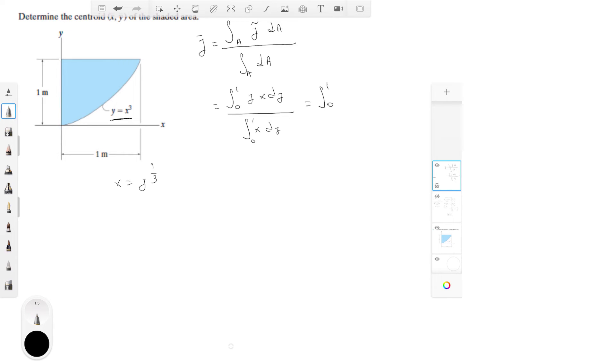Integral from 0 to 1 of y to the four thirds dy, all over, you go from 0 to 1 of y to the one third dy. Now just solve the integral: 3y to the seven thirds over 7 from 0 to 1 over, and the bottom is 3y to the four thirds over 4.